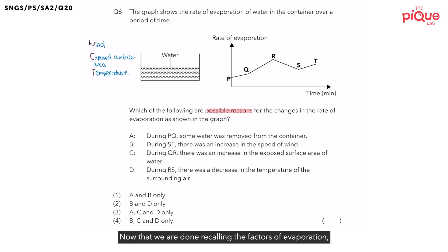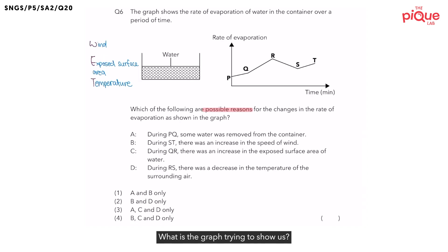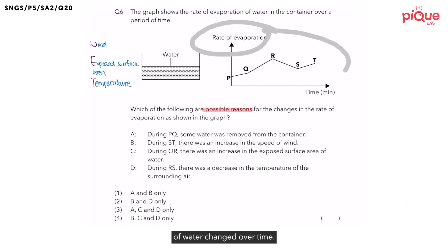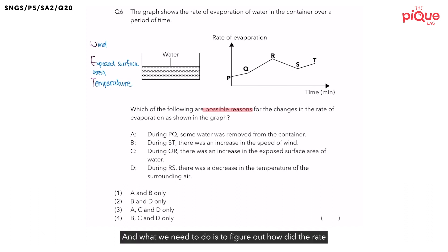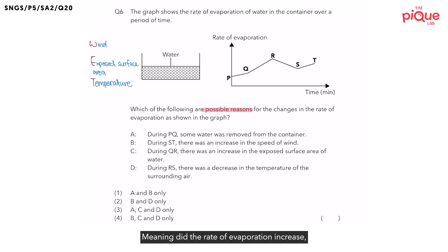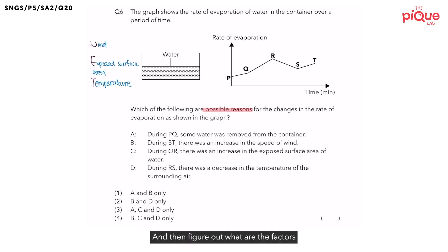Now that we are done recalling the factors of evaporation, let's take a look at the graph. The graph is trying to show us how the rate of evaporation of water changed over time. What we need to do is figure out: did the rate of evaporation increase, decrease, or remain the same? Then figure out what factors resulted in this change.